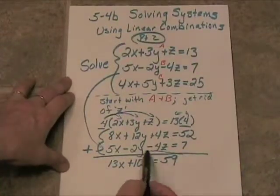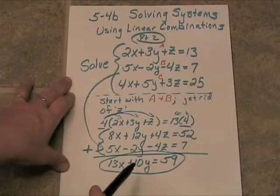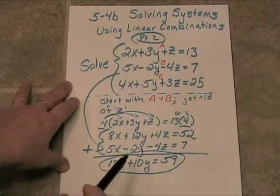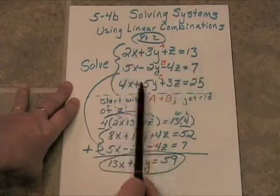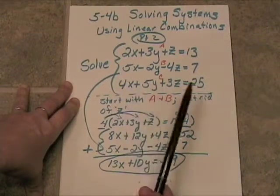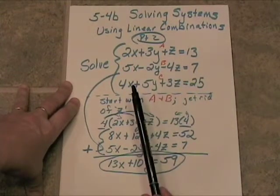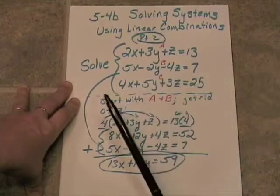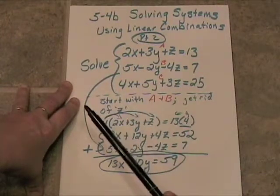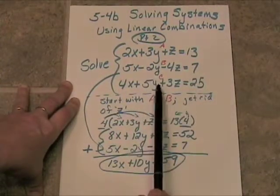So now here we have an equation in two variables. Now I'm going to go back up to the original system, and I'm going to pick two other equations. First I used A and B. I think the next thing I'm going to use is A and C.